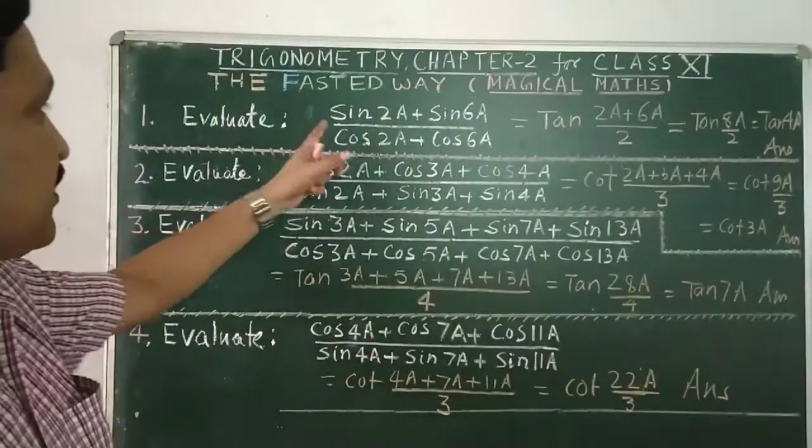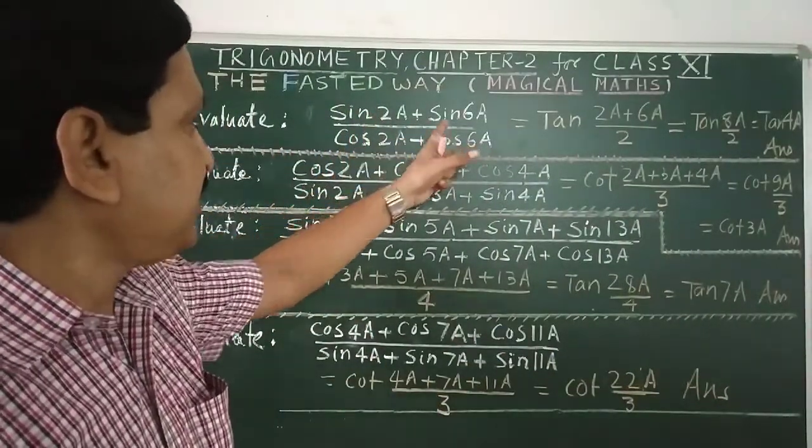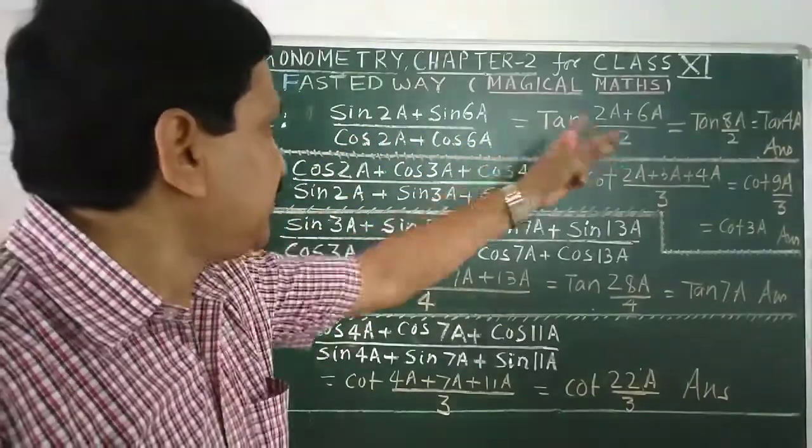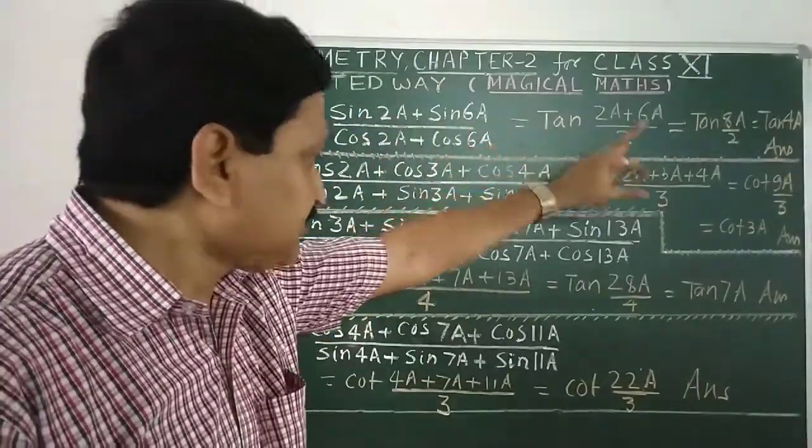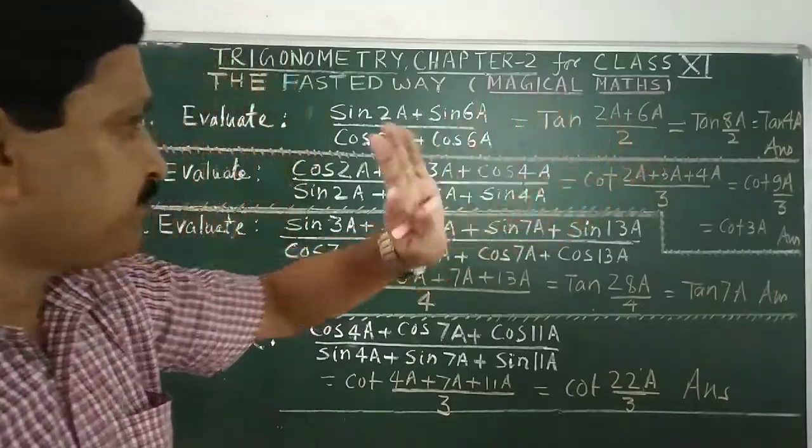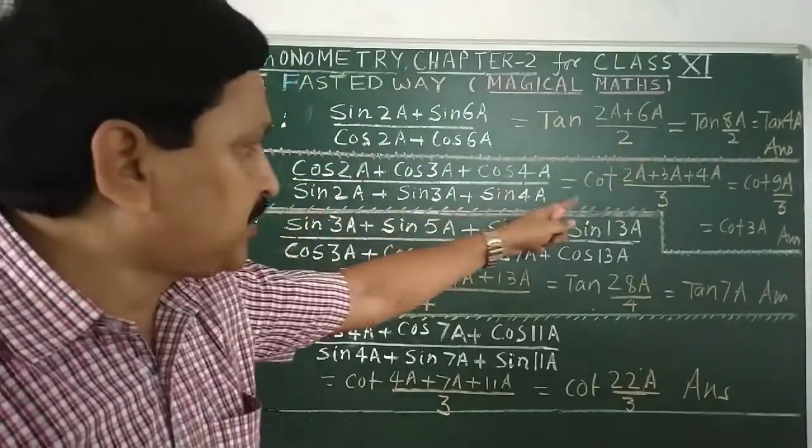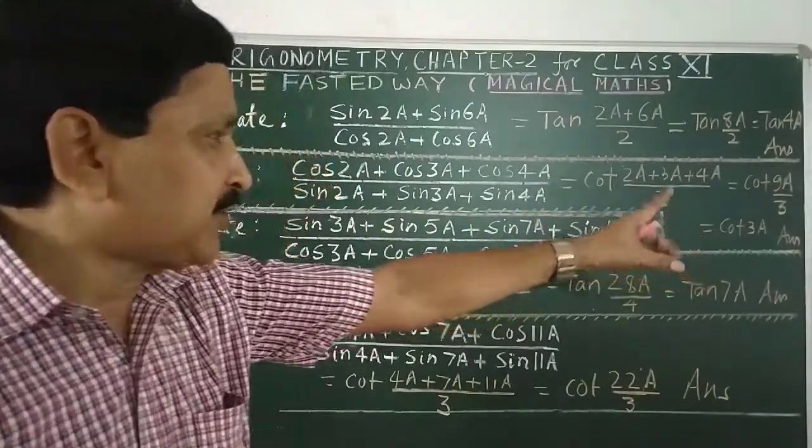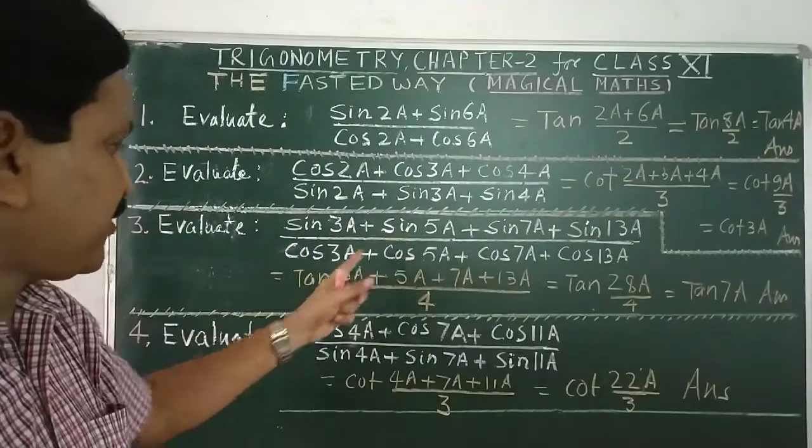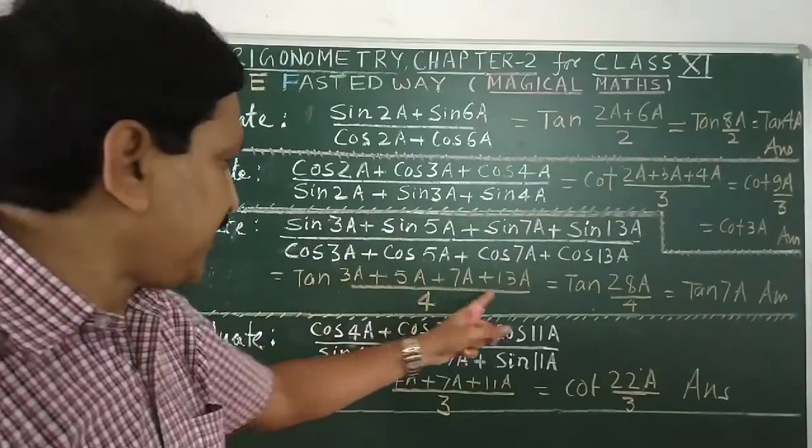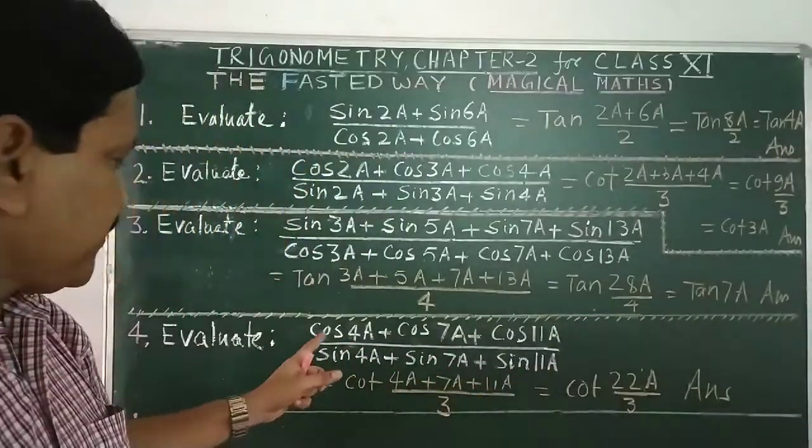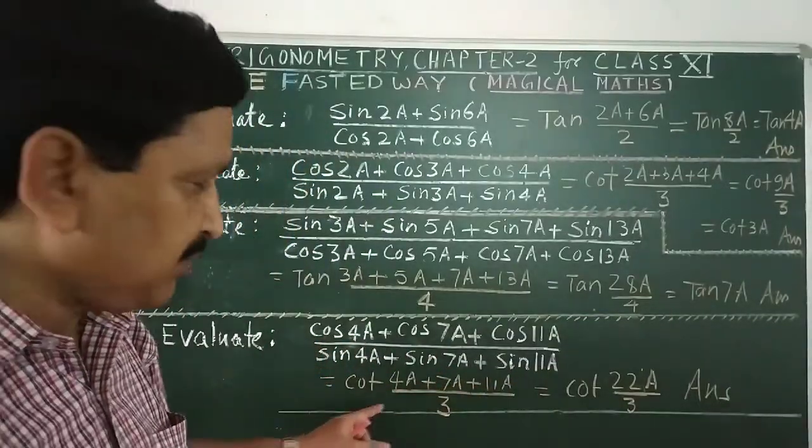So students, once more, sin by cos is called tan. So tan, average of two angles, divide by two, tan 4A. Now cos by sin cot, average of three angles, final answer cot 3A. Now cos by sin is called cot.